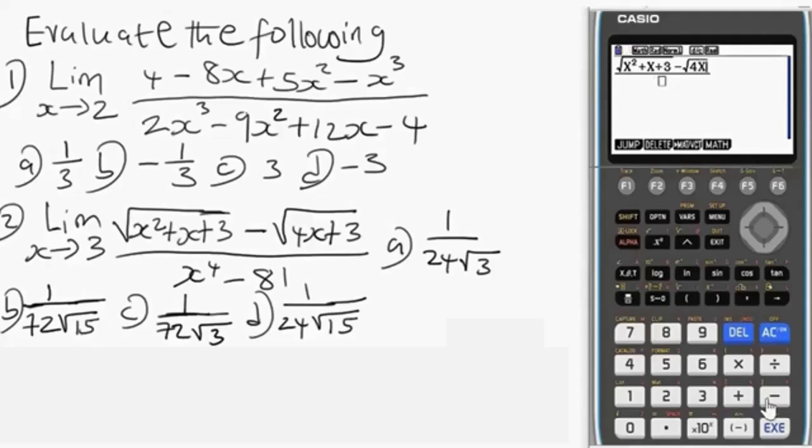Then plus 3. Then go to the denominator, we have X, ALPHA X, to the power 4, minus 81. And that's all for this equation, we are good to go.